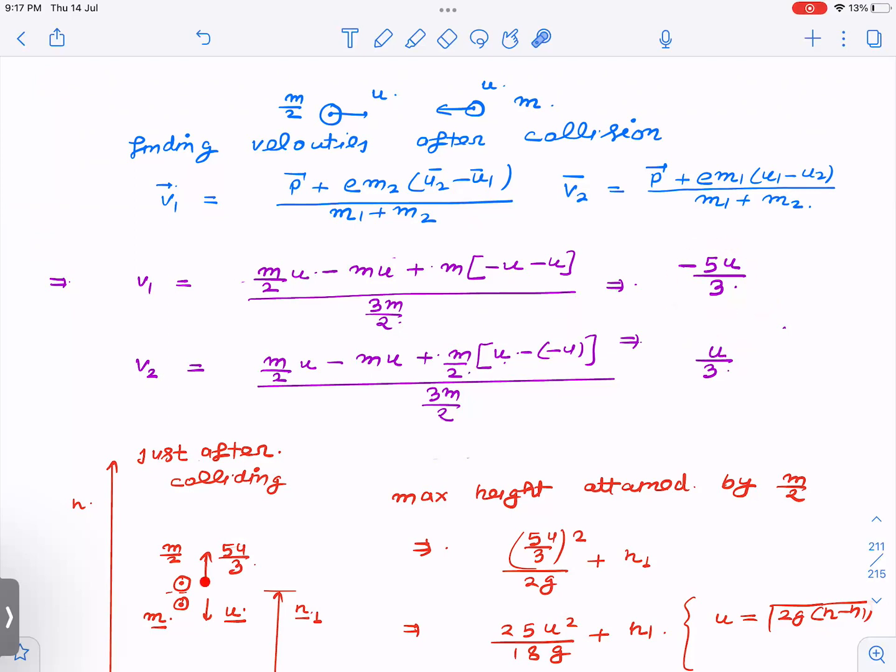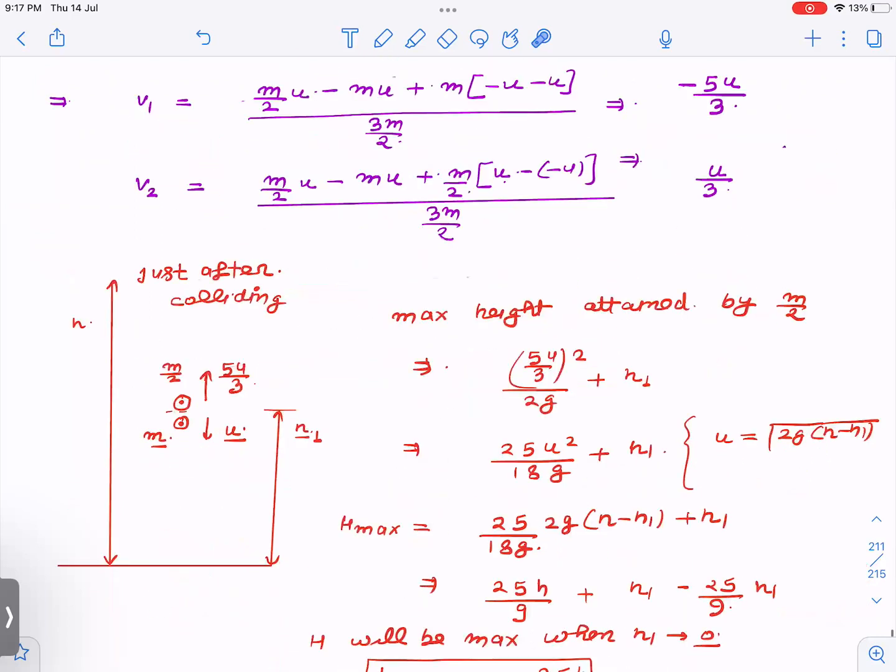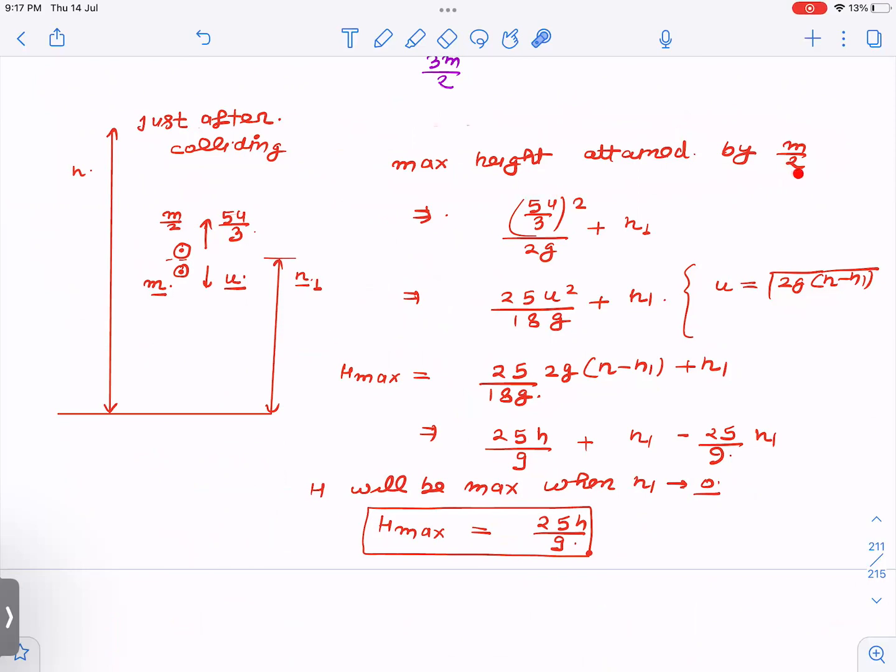Now just after colliding, this is the diagram. And now I'm going to calculate the maximum height attained by m/2. You can see that the velocity of m/2 is small, so it is going to get